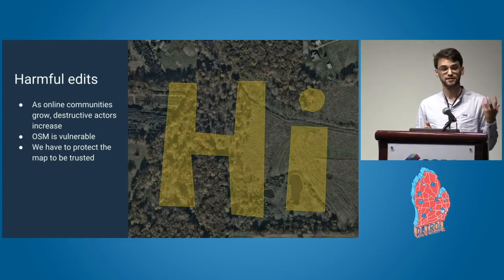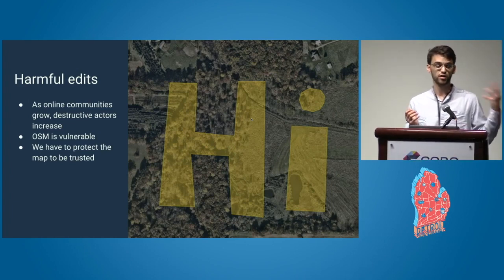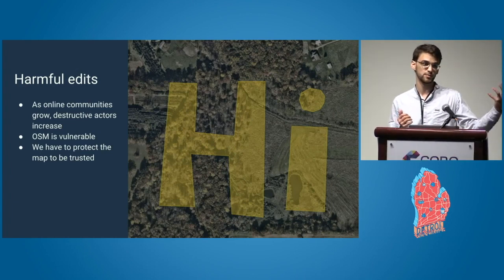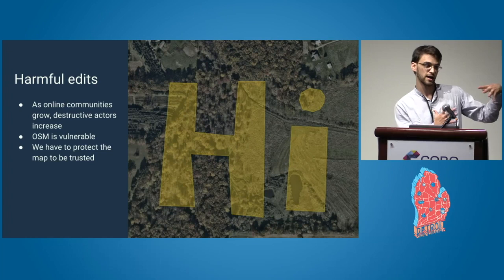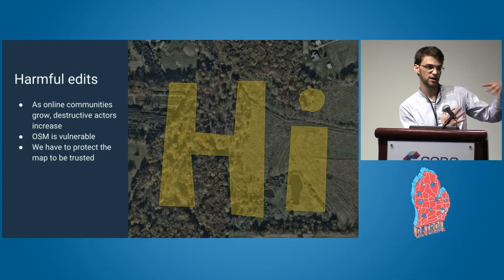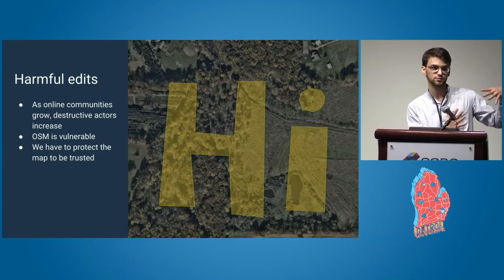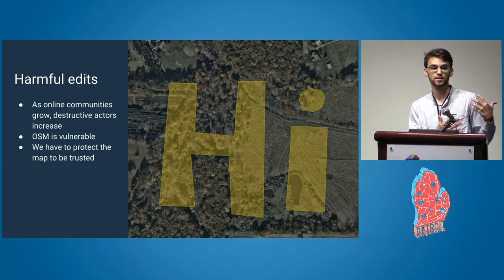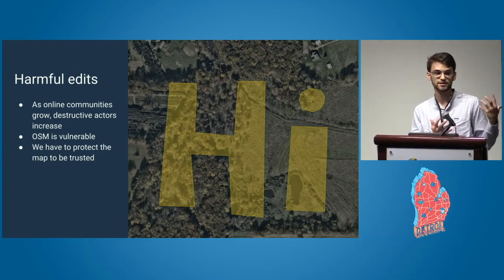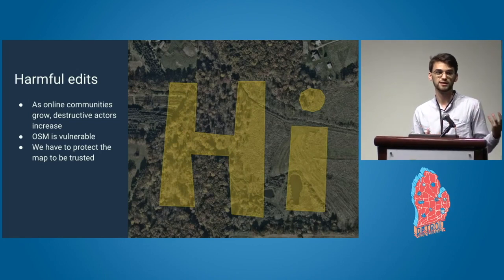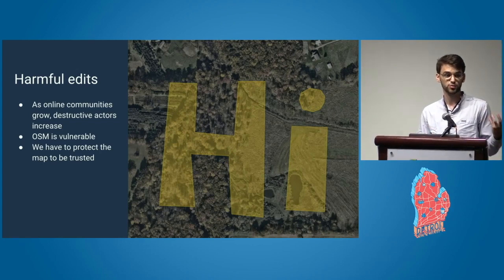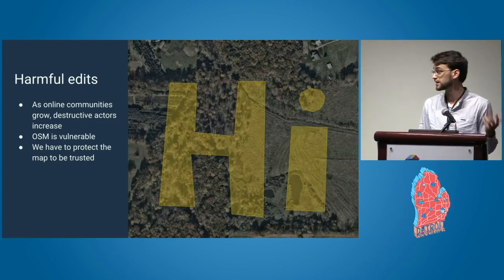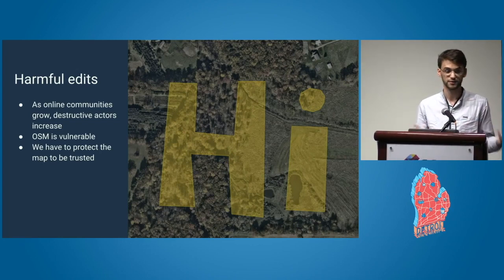It's really important that the user trusts OpenStreetMap in all end-consuming applications they use. As soon as they see something that hurts them or when you have vandalism, you break that trust. And we as OpenStreetMap don't want to break that trust because we want to reflect the world around us.